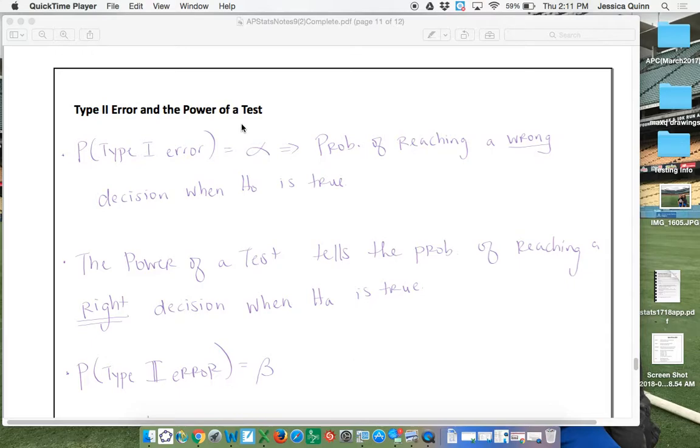that's the alpha level. So that's the probability of reaching a wrong decision when the null hypothesis is true. So the null is true, but we reject the null. That's our type 1 error.